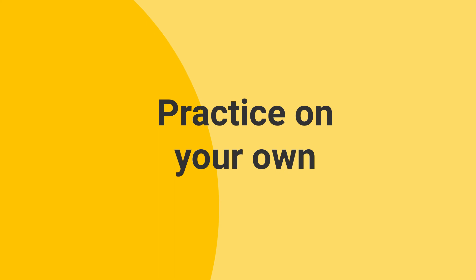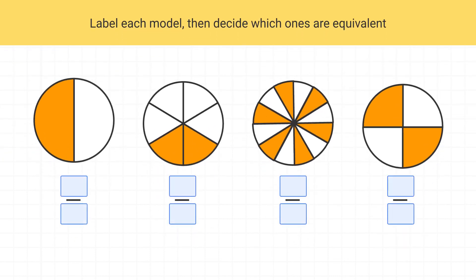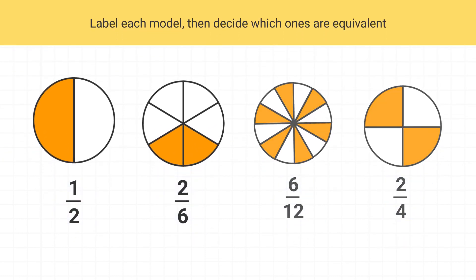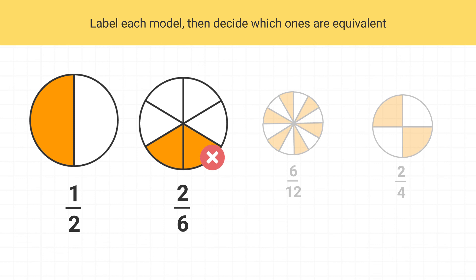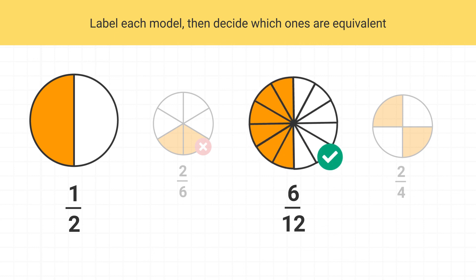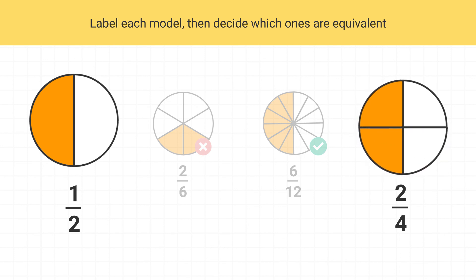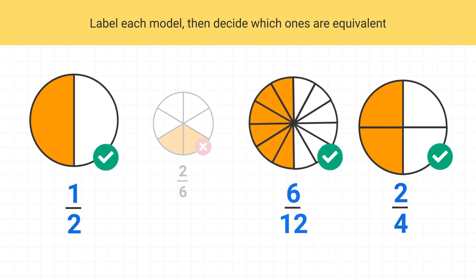Now it's time for you to practice on your own. Select which of these models show equivalent fractions. First, you should label the fractions. You can see two-sixths is definitely not the same as one-half. If you take all of the pieces in six-twelfths and put them together, you do see that it's equivalent to one-half. And if you take the two pieces in two-fourths and put them together, it's also equivalent to one-half. So one-half, six-twelfths, and two-fourths are all equivalent fractions.